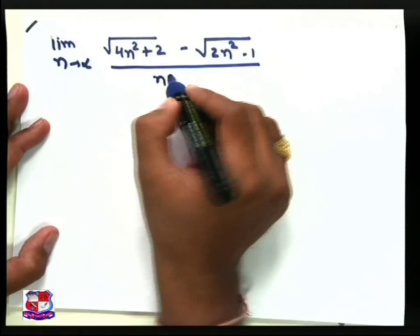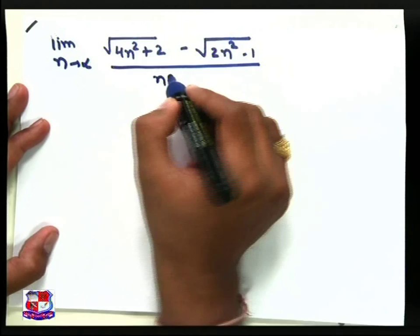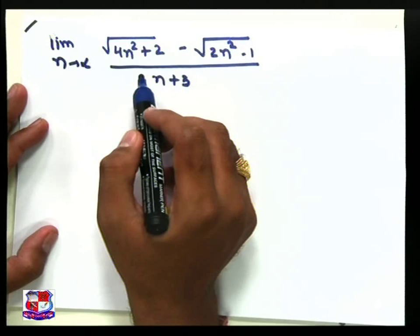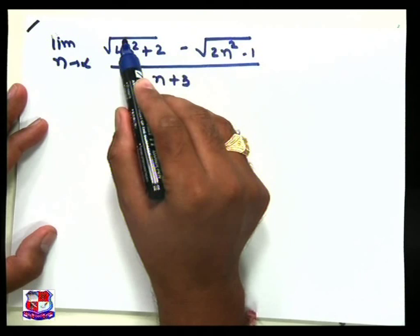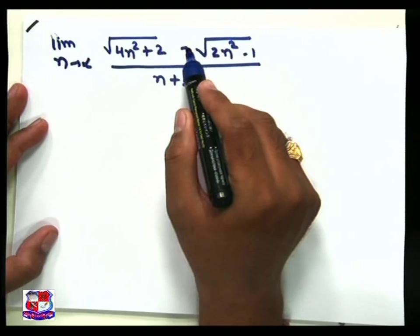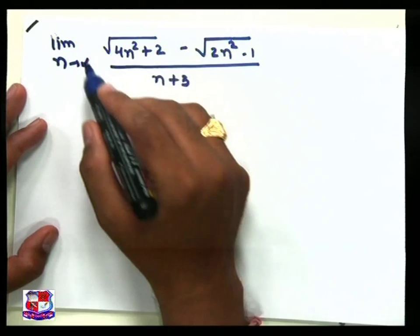Here n tends to infinite type sum. We must convert our sum into 1/n form because 1/n equals 0, and here there is a square root, so we must remove the square root. The first step to remove the square root is to take rationalization — multiply and divide the numerator. So we first take rationalization and then convert our sum into 1/n form.